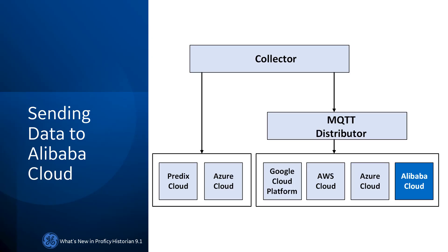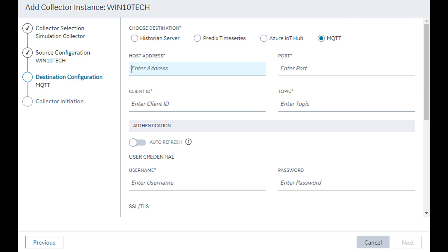Sending data to Alibaba Cloud. In addition to Google Cloud, AWS Cloud, and Azure Cloud, you can now send collected data to Alibaba Cloud via MQTT using Configuration Hub, as well as the Remote Collector Configurator utility. In Configuration Hub, when adding a collector instance, select MQTT as the destination and provide the details of Alibaba Cloud.